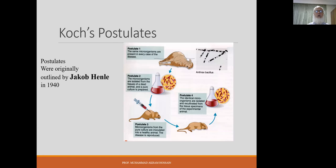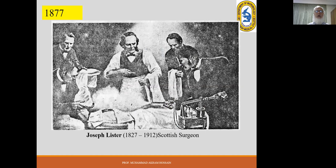Koch's postulates consist of four things: the same microorganism must be present in every case of disease; it must be isolated in pure culture; from the pure culture, it must cause the disease in an experimental animal; and from the experimental animal, the same identical organism must again be isolated.